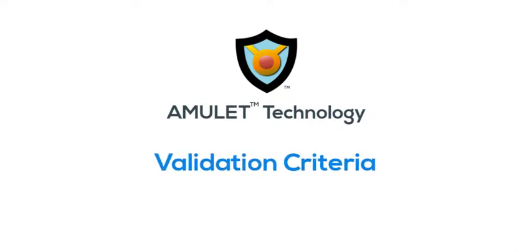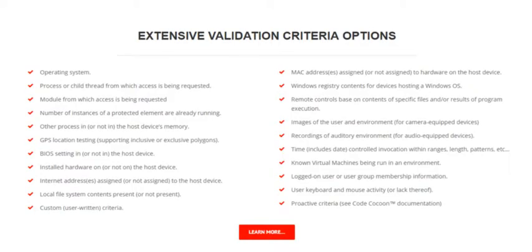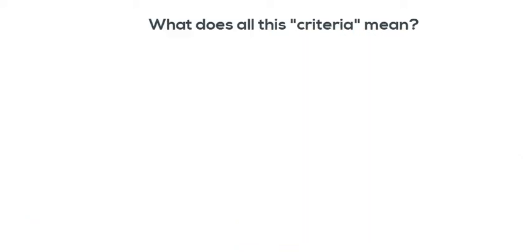Validation criteria is something we mention a lot when we discuss Amulet technology, so let's run through some examples to really understand what this is all about. You may have seen this page on our website displaying an extensive list of validation criteria options, but may not have understood these or how you use them. In this video, we're going to cover a few different criteria in very simple terms. This should provide you with a clear understanding of the flexibility and power of Amulet technology and how you might leverage it for your own uses.